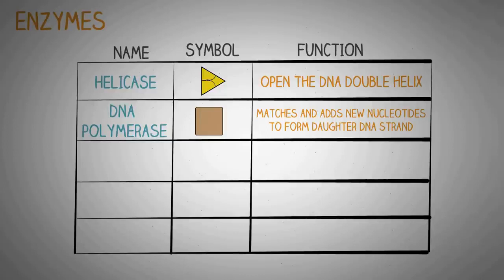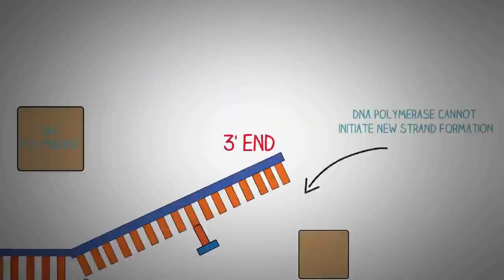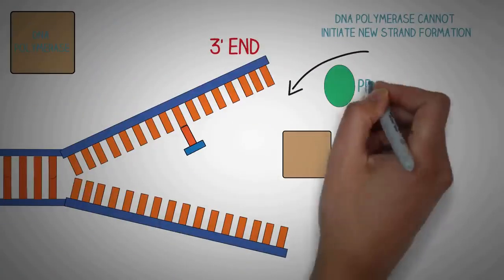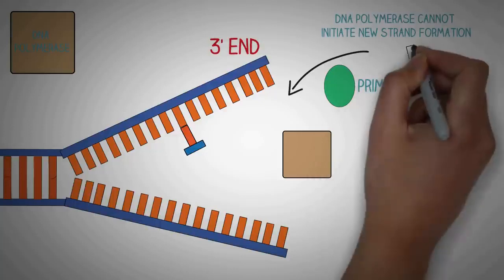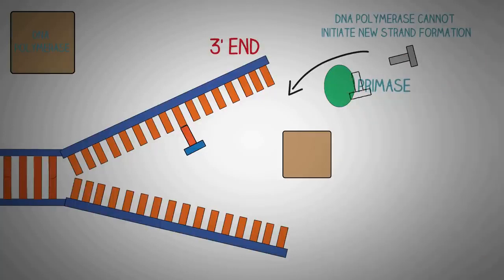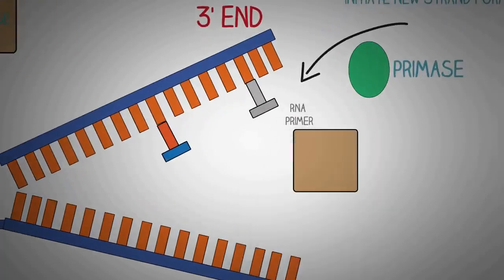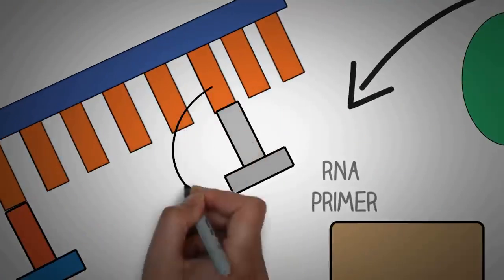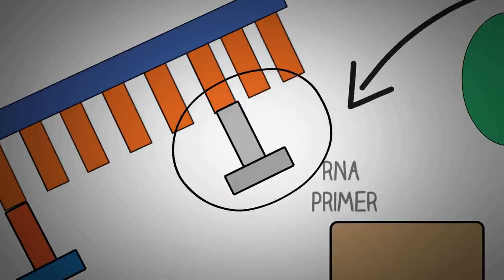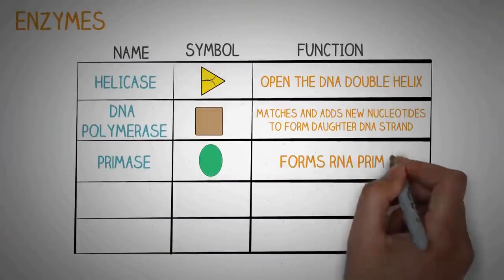That enzyme is RNA primase. Because DNA polymerase cannot initiate new strand synthesis on its own, primase synthesizes a short segment of RNA known as the primer, which acts as a guide for DNA polymerase to synthesize the strand further. This short primer segment is later removed and replaced by a new segment of DNA.